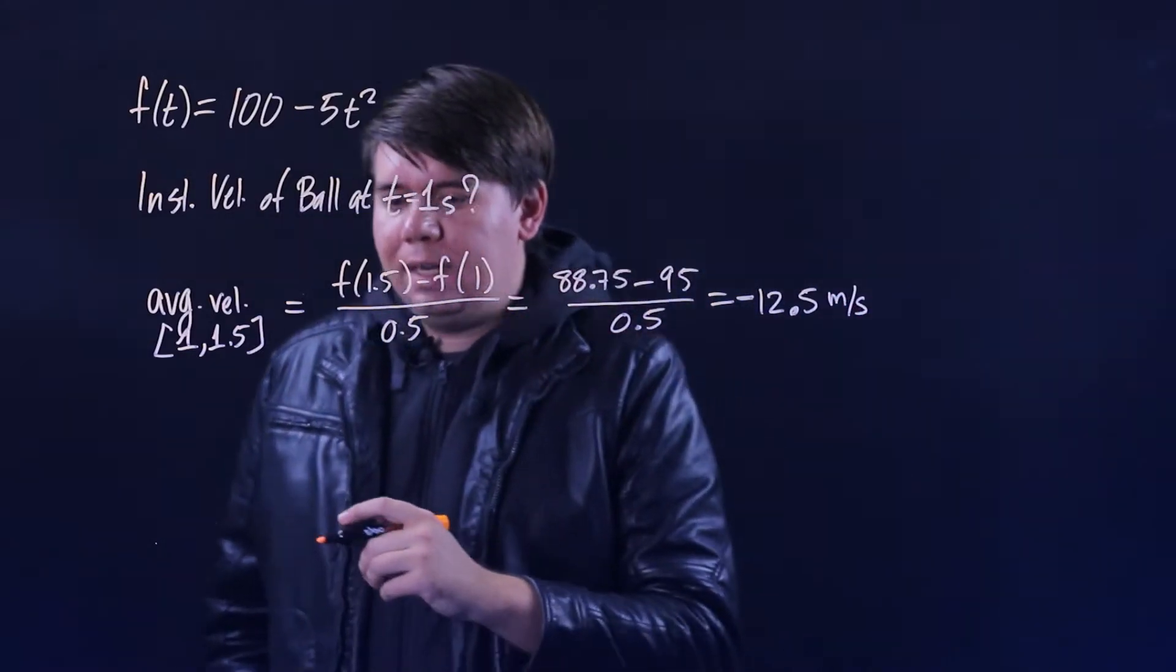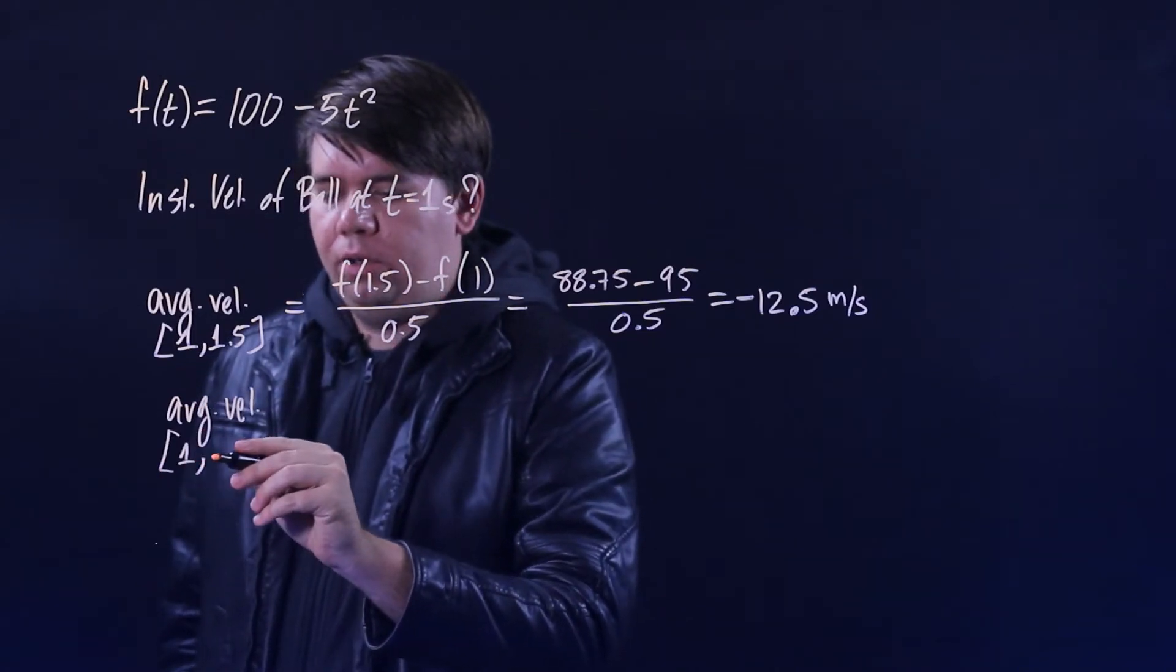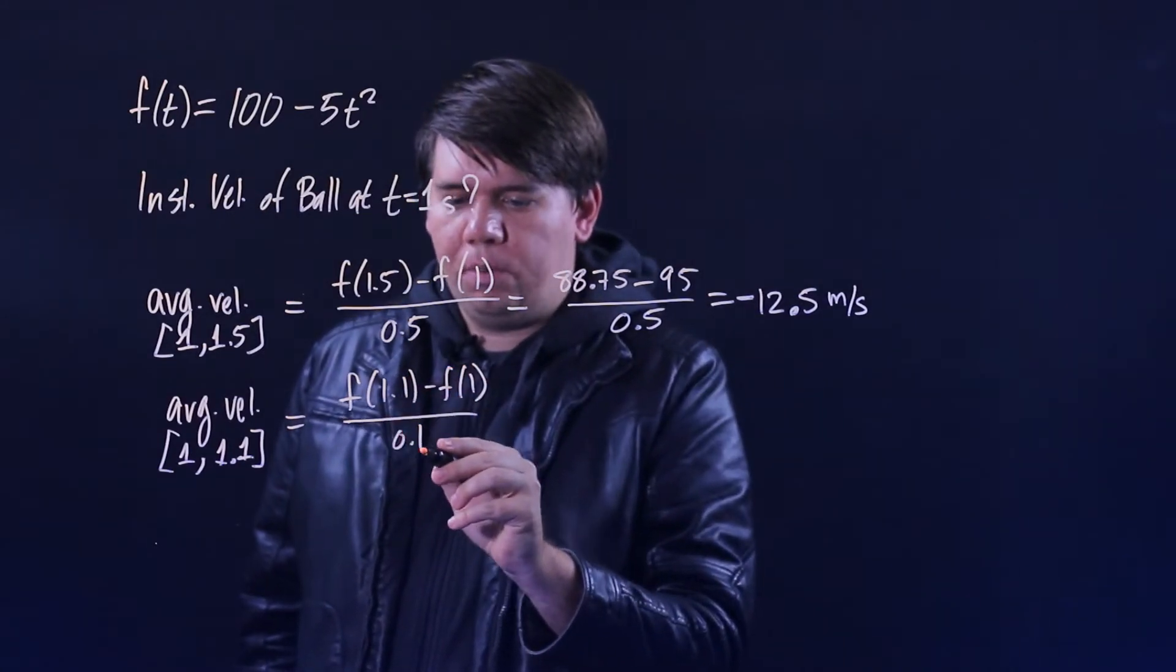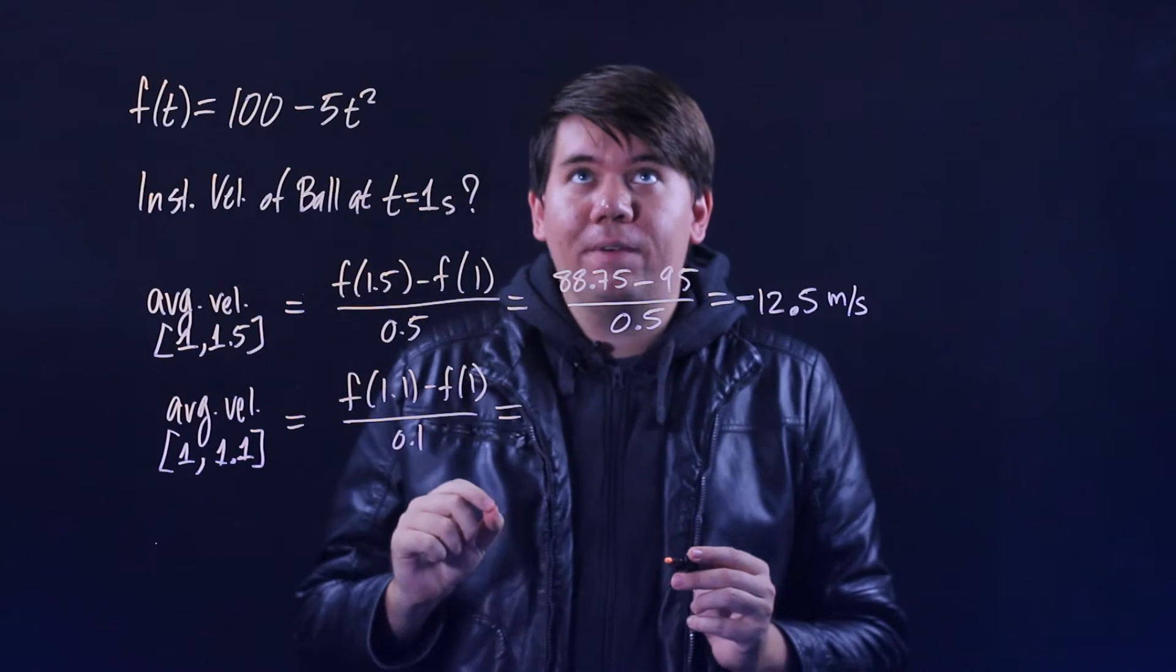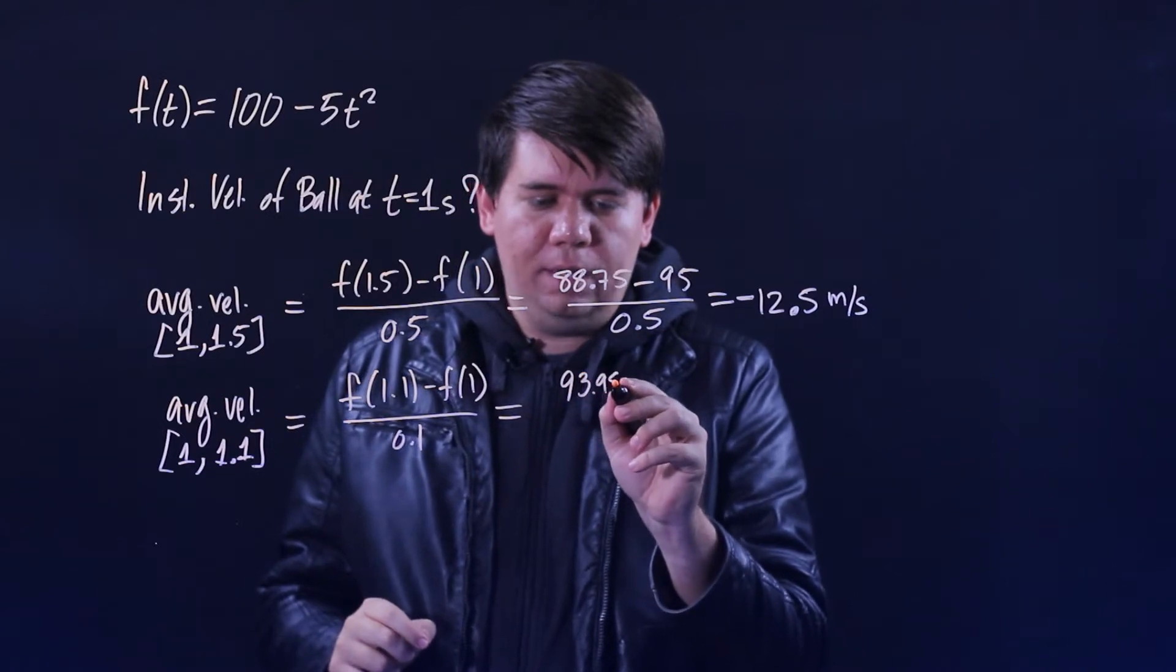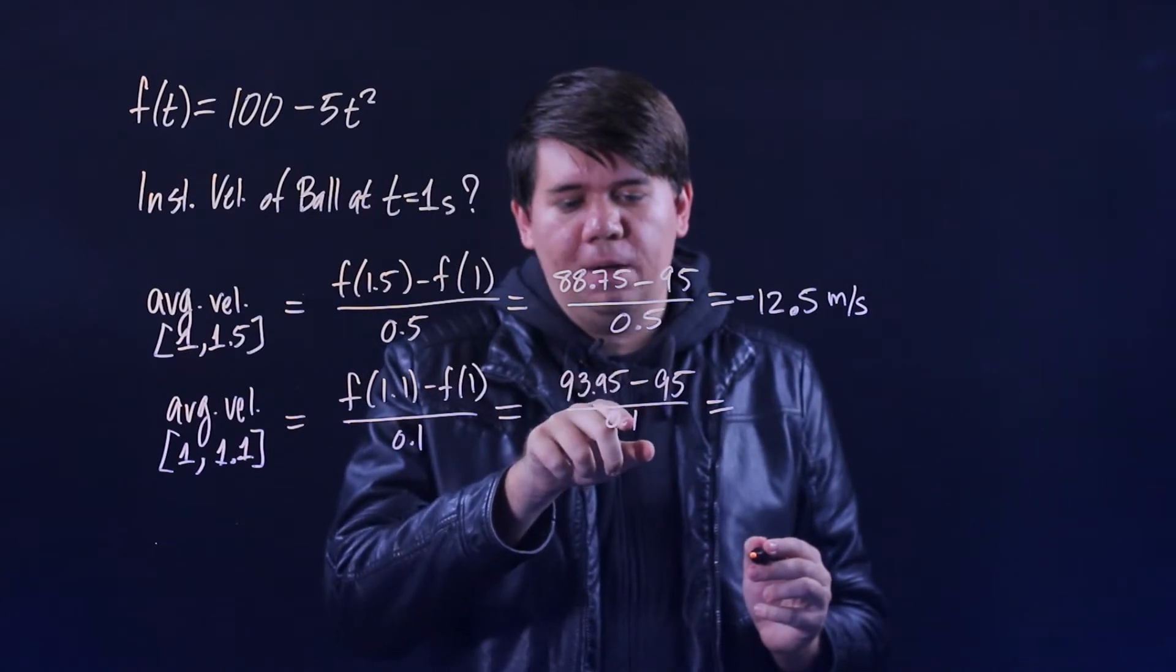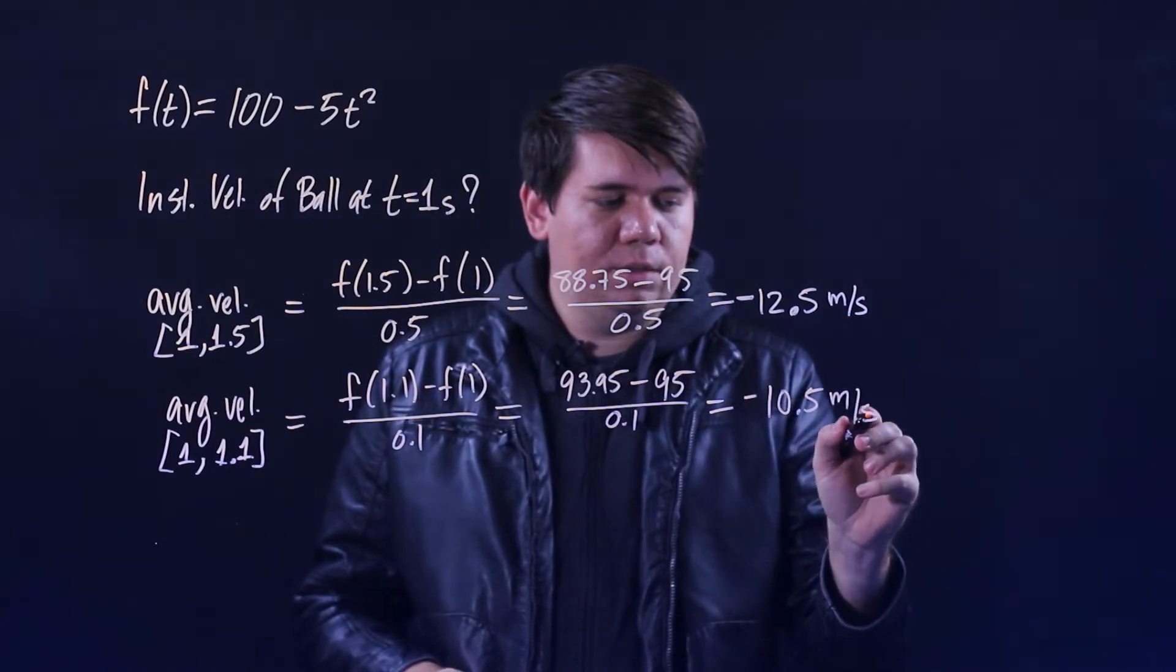Let's zoom in even closer. Now we can look at the average velocity from 1 to 1.1. Very similar: it would just be f(1.1) minus f(1) all over 0.1, the difference between these. Plug in 1.1: you get 1.1² is 1.21 times 5 is 6.05, subtract from 100 is 93.95. f(1) is 95, all over 0.1. So that's going to give you -1.05 divided by 0.1, or times 10, that's going to give you minus 10.5 meters per second.